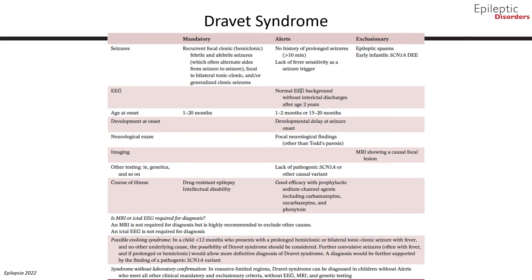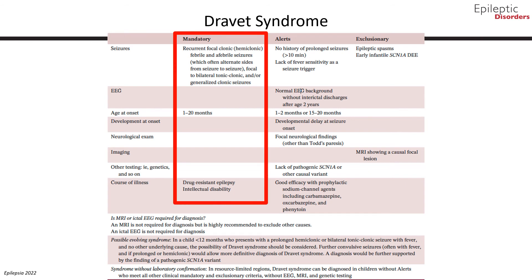Dravet syndrome, previously known as severe myoclonic epilepsy of infancy, presents in the first year of life in a normal child with prolonged febrile and afebrile focal clonic, usually hemiclonic, or generalized clonic seizures. Other seizure types, including myoclonic and atypical absence seizures, appear between ages 1 and 4 years. Seizures are usually intractable, and from the second year of life, children demonstrate cognitive and behavioral impairments. The clinical diagnosis is supported by identification of a pathogenic variant of the sodium channel gene SCN1A, found in over 80% of cases. Age of onset is typically between 1 to 20 months, with a mean and median age of 6 months. Rare cases can present as early as 1 month or as late as 20 months.